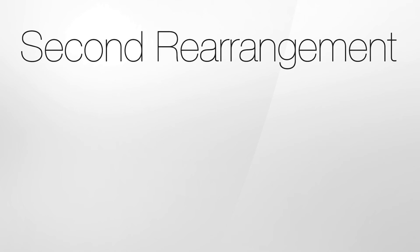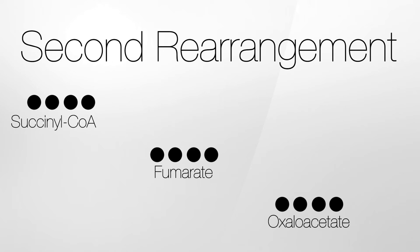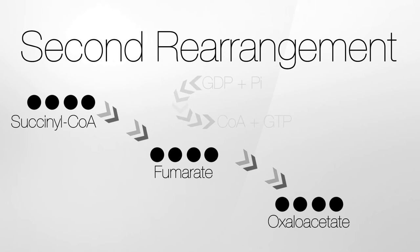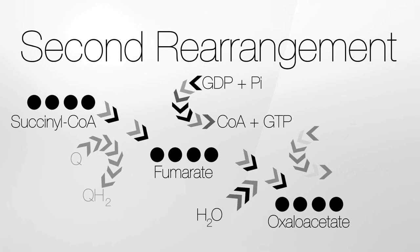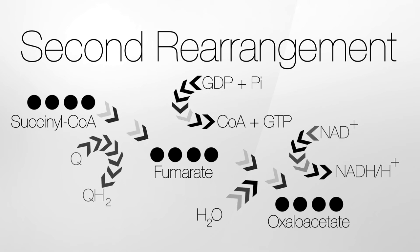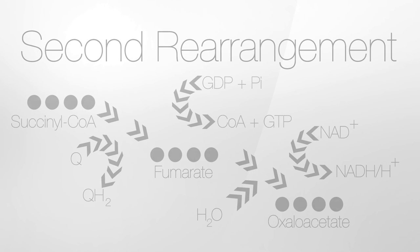In the final stage, another rearrangement occurs. Succinyl-CoA is converted to oxaloacetate, the starting molecule of the cycle, with the concomitant production of GTP, an energy carrier of animal mitochondria similar to ATP, and the production of NADH and QH₂, an electron carrier.